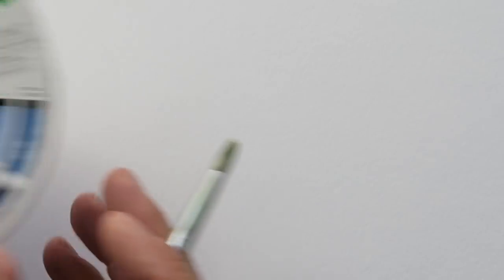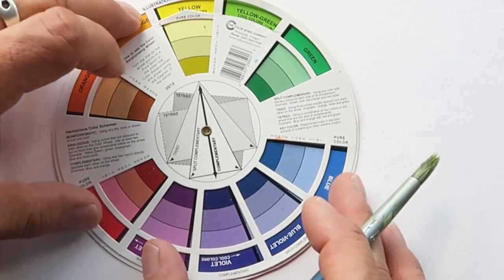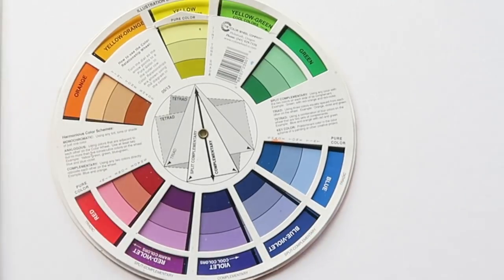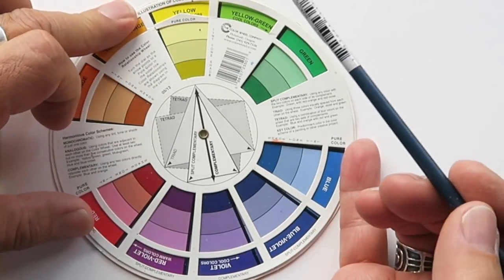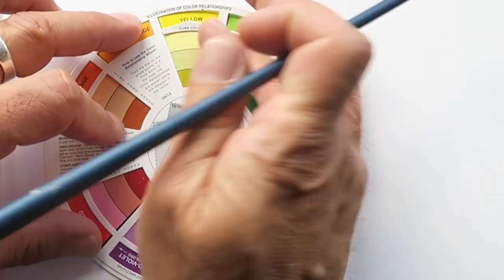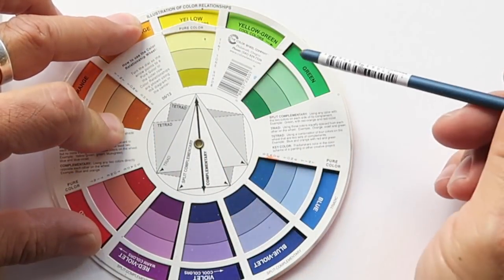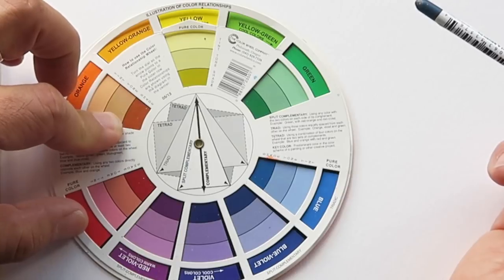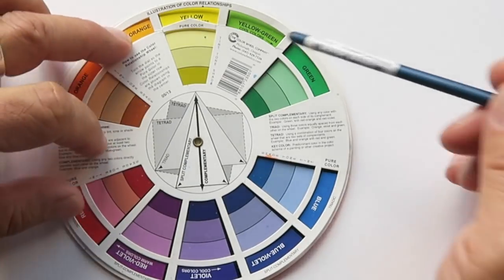So I'm first going to show you on the color wheel why this works. Well, because you don't need any color wheel to tell you something works. You can look at it and say it works because it makes you happy. And it works for you. But if you want to know why it really works in this case, I'll show you it on the color wheel.